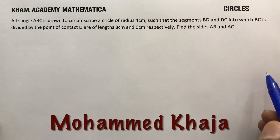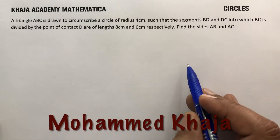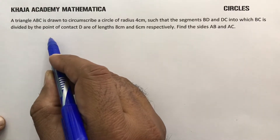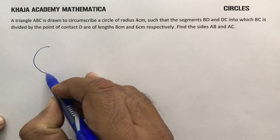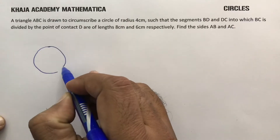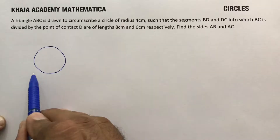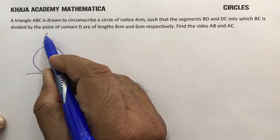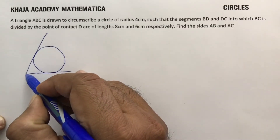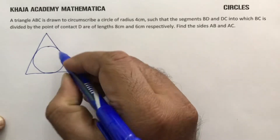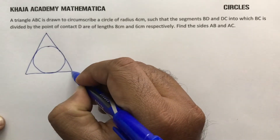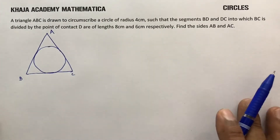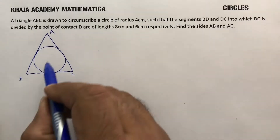A triangle ABC is drawn to circumscribe a circle of radius 4 centimeters. Here I will draw triangle ABC circumscribing a circle of radius 4 centimeters.